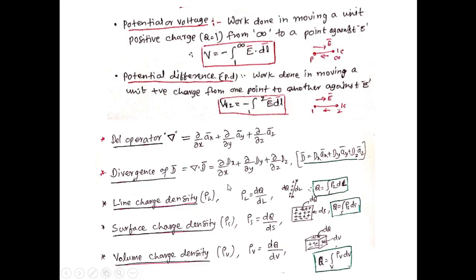Next, we will define line charge, surface, and volume charge densities. Line charge density rho-L is given by dQ/dL. When a line has positive charges, Q = ∫ rho-L dL. Surface charge density rho-S is given by dQ/dS, so Q = ∫ rho-S dS. Volume charge density rho-V is defined as dQ/dV, where dV is a differential volume, so Q = ∫ rho-V dV.